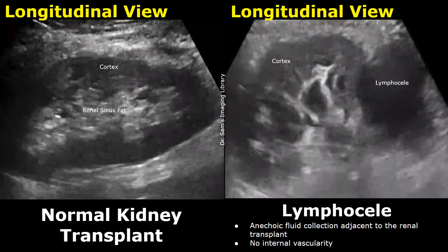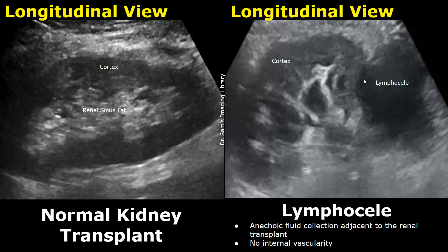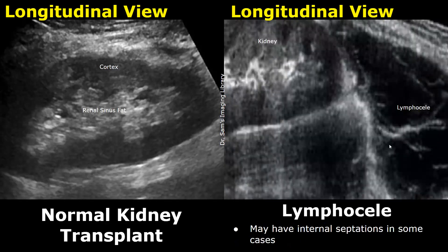Here is another example of a lymphocele. We can see an anechoic fluid collection adjacent to the renal transplant, and there will be no internal vascularity on color Doppler. Some lymphoceles may have internal septations, as we can see in this example — this fluid collection has internal septations.